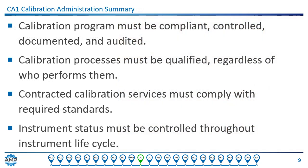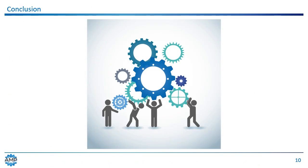Here's a summary of the calibration administration function. The calibration program must be compliant, controlled, documented, and audited. Calibration processes must be qualified, regardless of who performs them. Contracted calibration services must comply with required standards. And instrumentation status must be controlled throughout the instrument lifecycle. This concludes Calibration Administration Process Descriptions. Thank you for your participation.